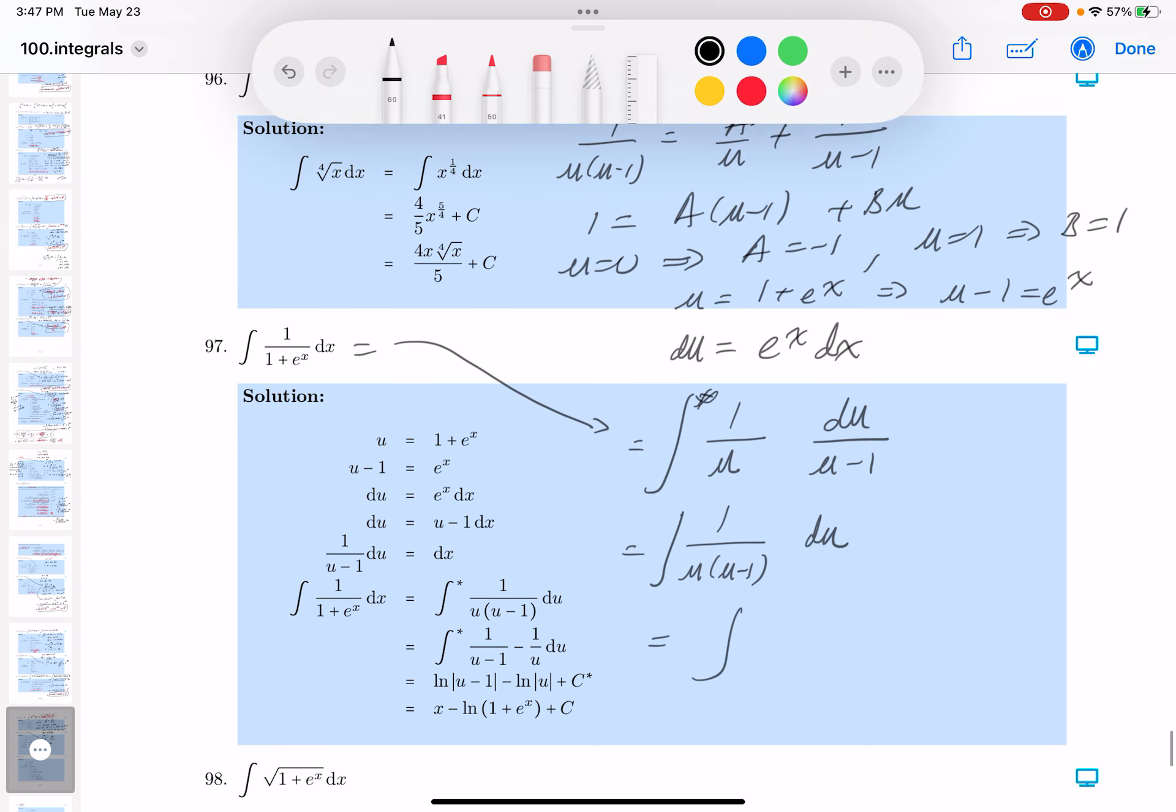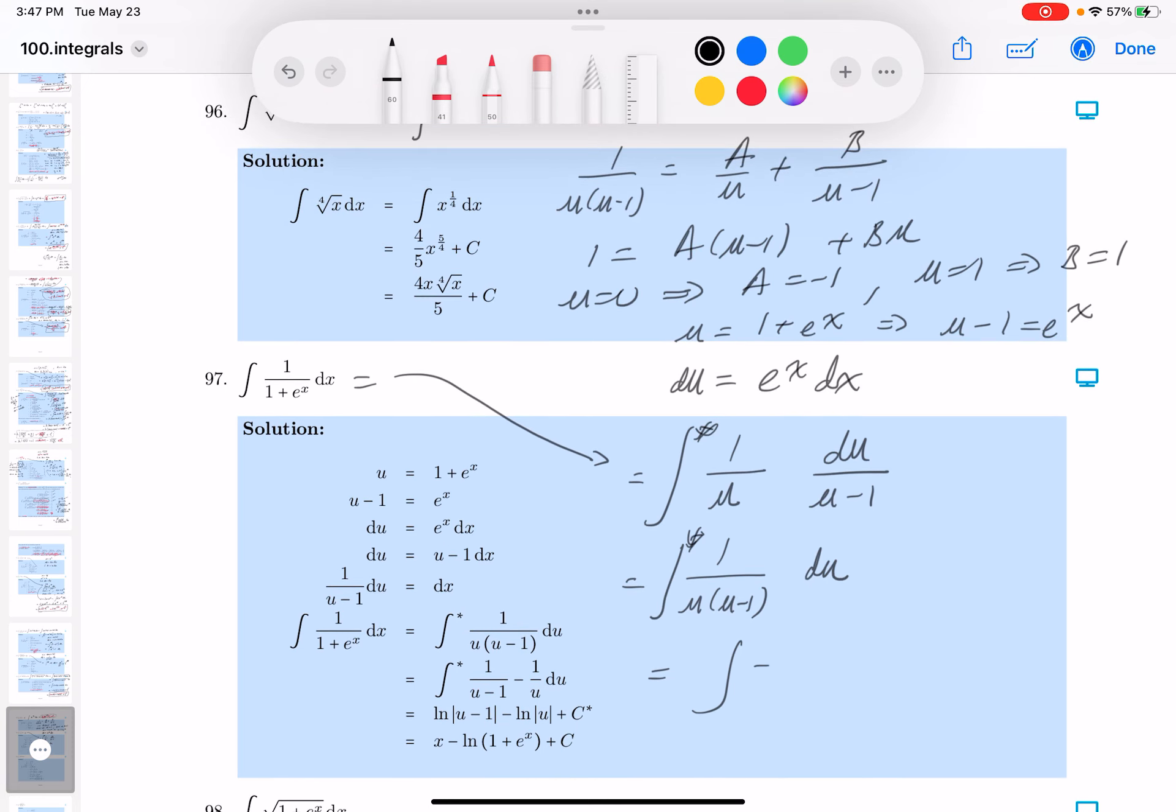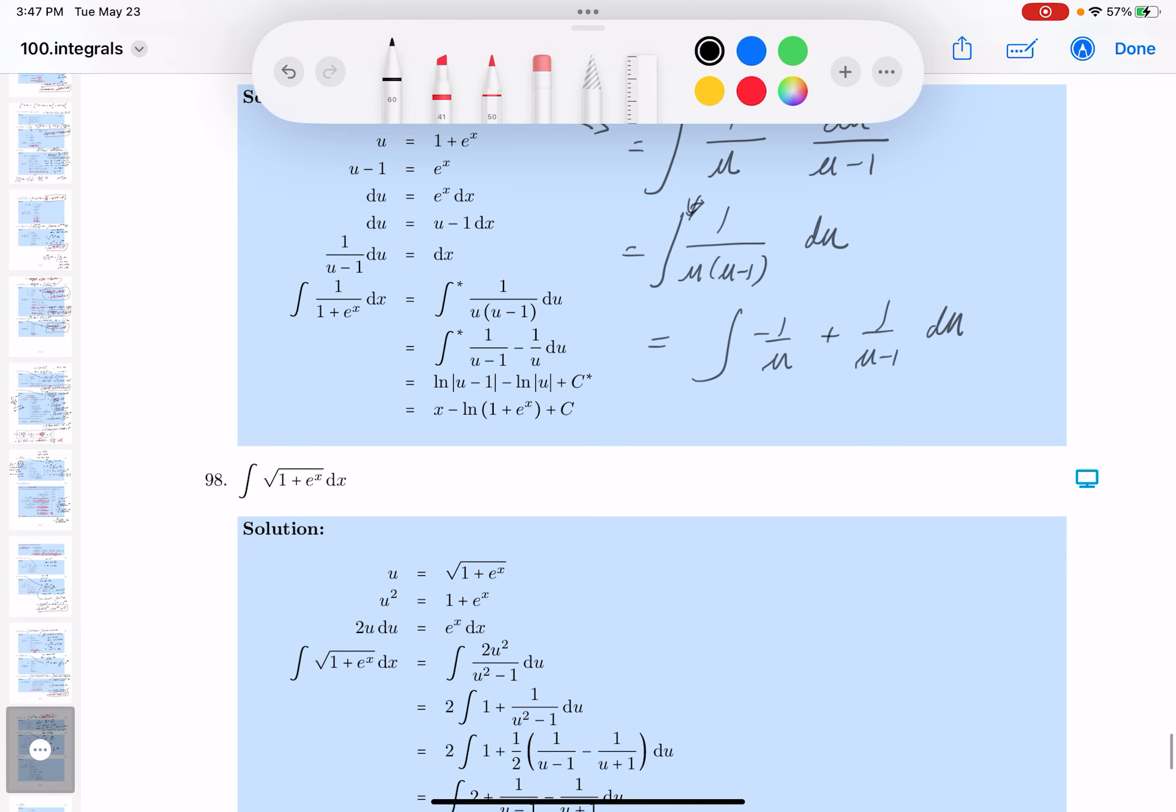What do you get over here? Let's be careful now. And what do you get again? a is minus 1. So you get minus 1 over u plus, the b was 1, 1 over u minus 1 du. Let's keep moving forward.